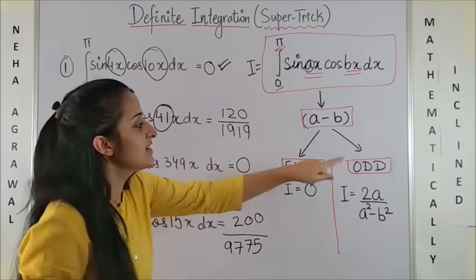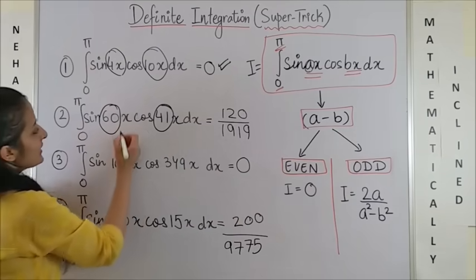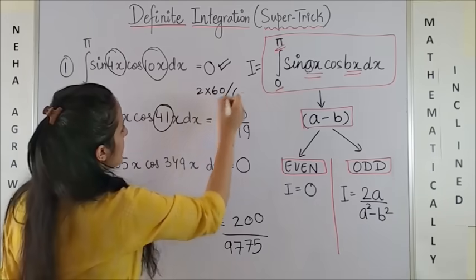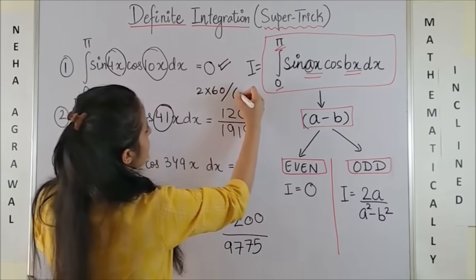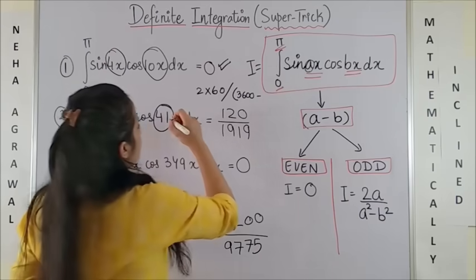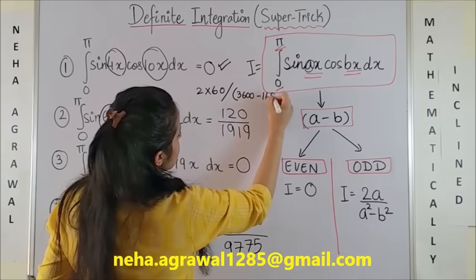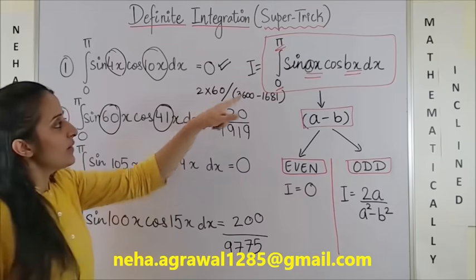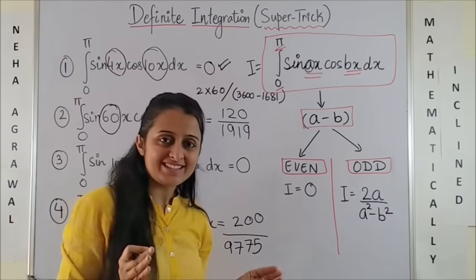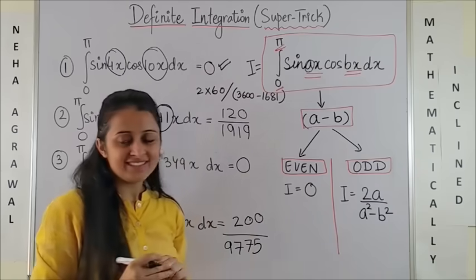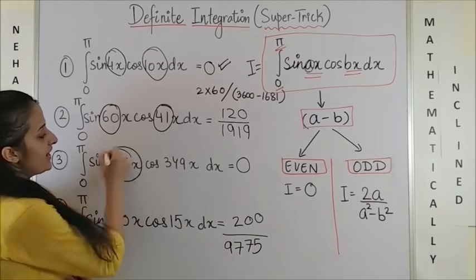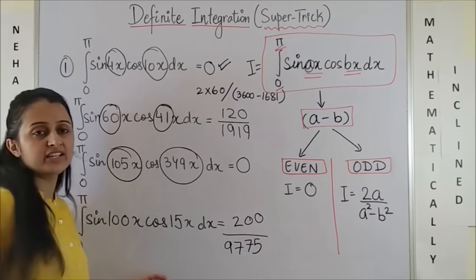Moving on to the second one: 60 minus 41 — we don't have to get the exact number, but we understand 60 minus 41 gives us an odd number. So the answer should be 2 × 60 upon (60² − 41²), which gives us 3600 − 1681, and once you calculate you end up getting 120 upon 1919.